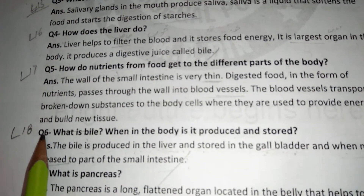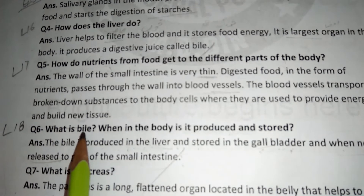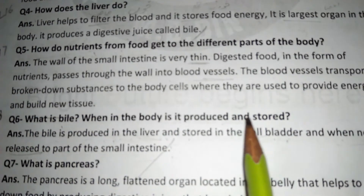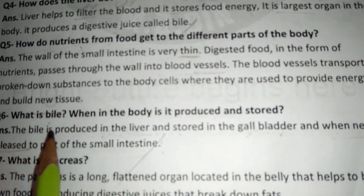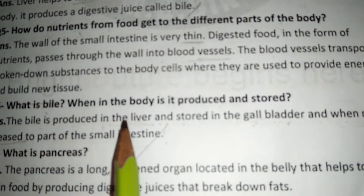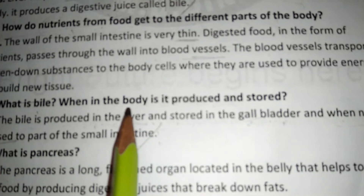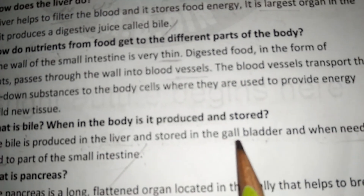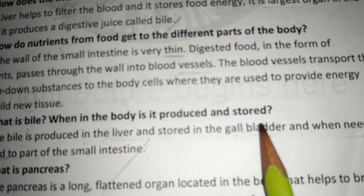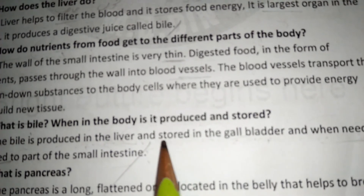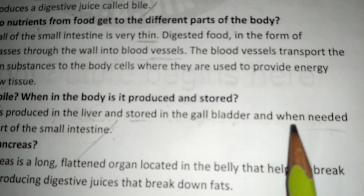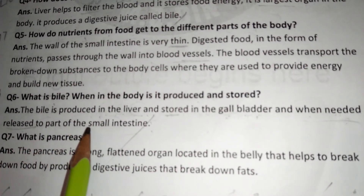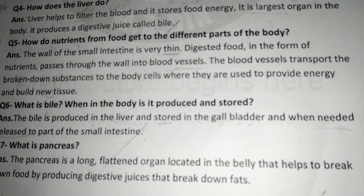Question number 6: What is Bile? When in the body is it produced and stored? Bile is produced in the liver and stored in the gallbladder. When needed, it is released into the small intestine.